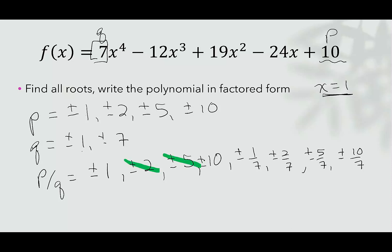So when I go back to this long list of numbers, I can get rid of a bunch of them. I don't need the 2, the 5, the 10. I also don't need 10/7 because 10/7 is greater than 1, and I already know that 1 is a solution, so I'm not going to look at it either. I only need to look at 1/7, 2/7, and 5/7.